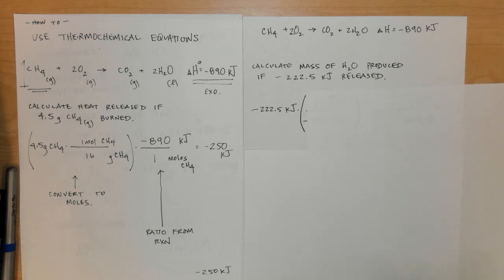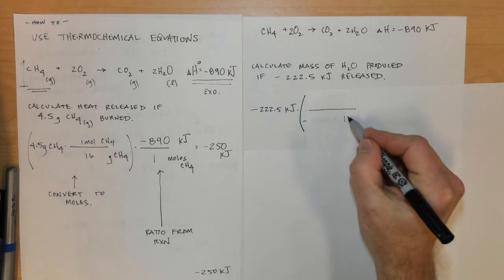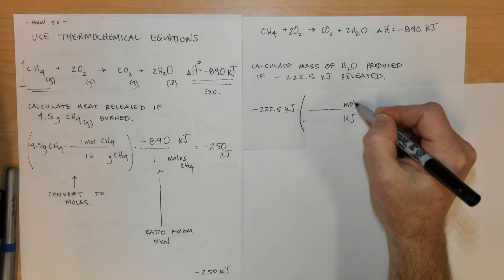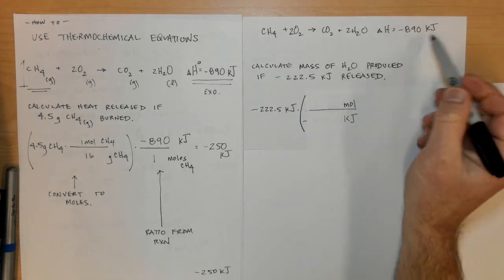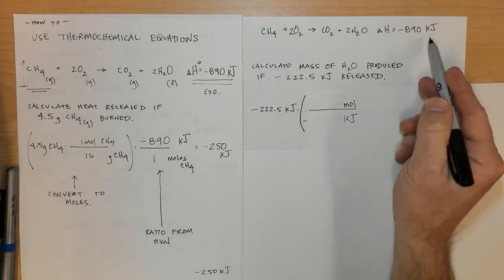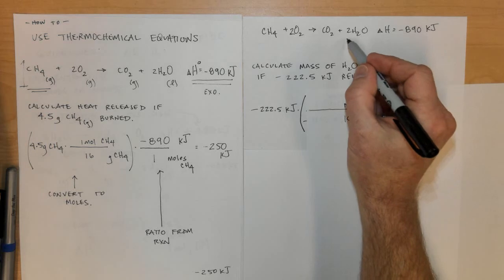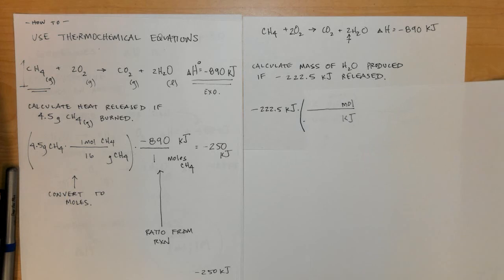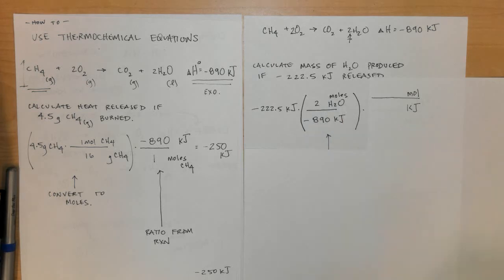I'll put a ratio here, and this time I will put kilojoules in a position where it's going to cancel and relate it to the moles in the balanced thermochemical equation. There are negative 890 kilojoules for every two H2O's. Notice they ask for H2O, so my relationship will be negative 890 kilojoules for every two moles of H2O.